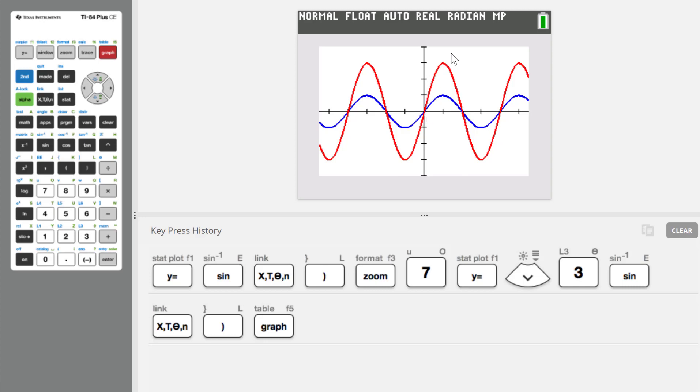What about the period? Well, this red graph starts to repeat. When you get to here, that's the same spot. That's still 2 pi, so the period is unchanged.